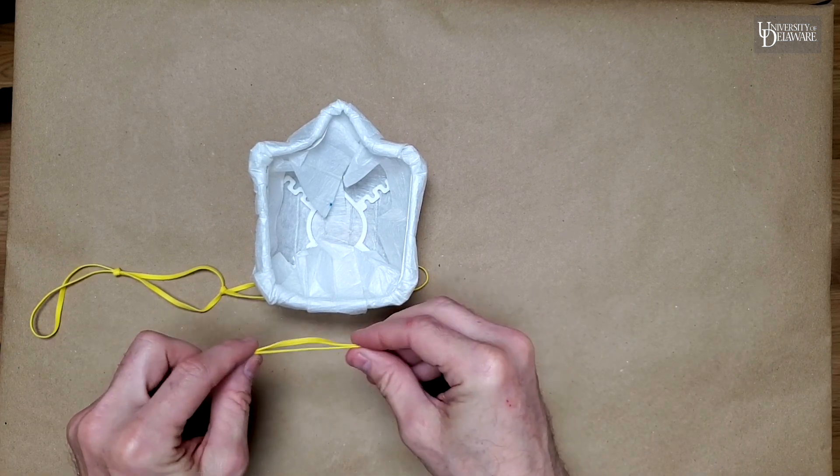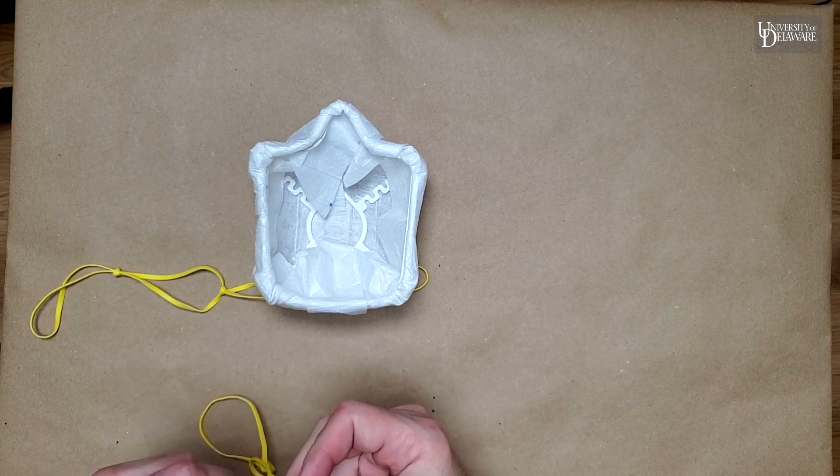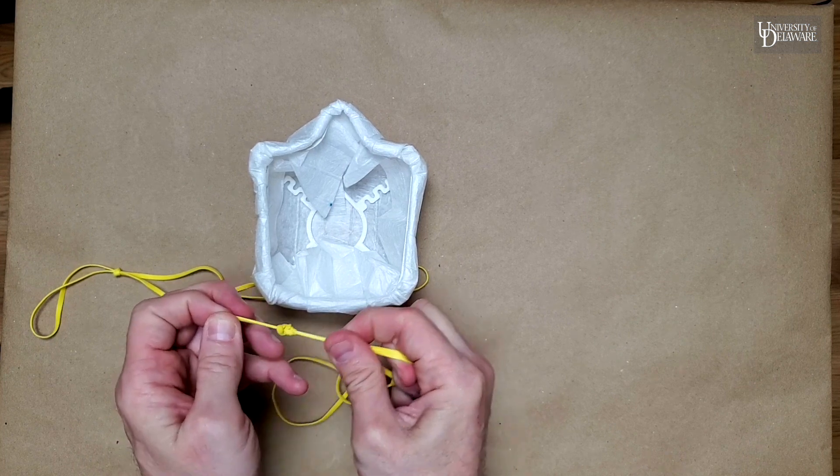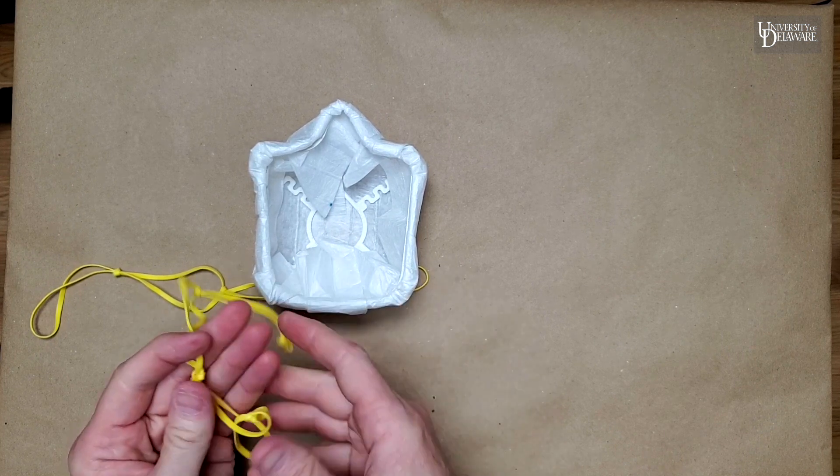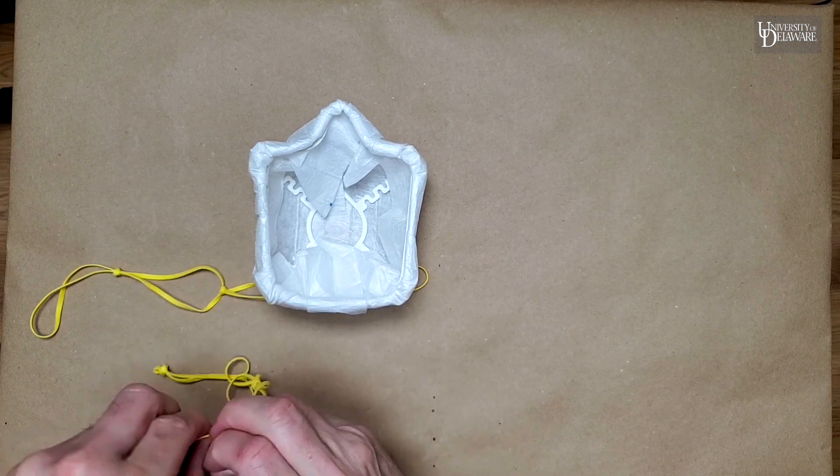And what I do with the ends of these is just grab a tiny little bit of it to stretch a really small loop. And that really small loop is going to help it stay on the horns at the four corners of the mask, which I'll show you in a minute.